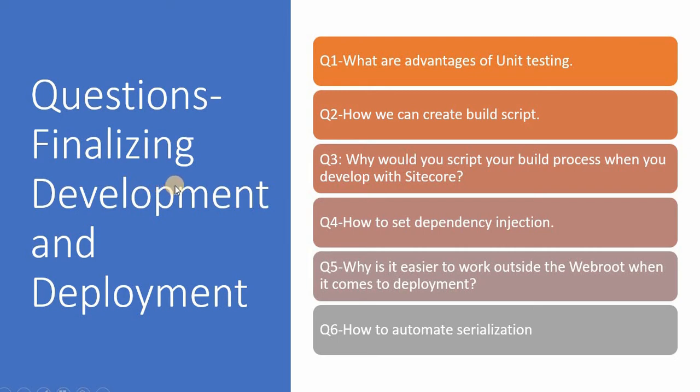The next topic is finalizing and development. The first question is: what are the advantages and disadvantages of unit testing? You should know the advantages and any disadvantages. The second question is: how can you create a build script? How can you create a build script and automate the whole process? The third question is: why would you script your build process when you develop with Sitecore? What are the advantages of building a script when involved in Sitecore development?